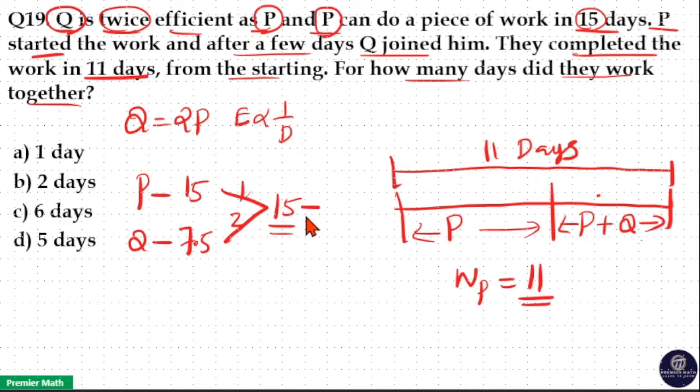So remaining work is 15 minus 11, that is 4 units. This 4 units is completed by Q. Q's efficiency is 2 units. So 4 by 2, 2 days. So option B is your answer.